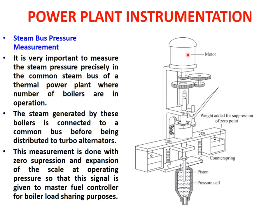The diagram for steam bus pressure measurement shows that the motor is at the upper end with a vertical shaft, and a weight is added for suppression of the zero point. This weight balances the beam to detect horizontal deflection, allowing measurement of the steam pressure. A piston performs pressing action in the downward or upward direction like a plunger, and a pressure cell measures the exact pressure of the steam flowing through the system. A gearing arrangement changes the motor speed as required.